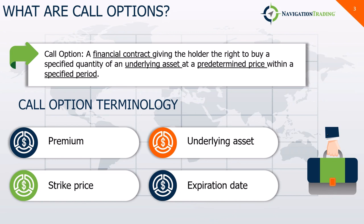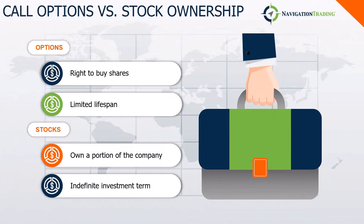Let's talk about call options versus buying stocks themselves. With options, the holder has the right but not the obligation to buy shares of an underlying asset at a certain strike price. With buying a stock, purchasing shares of the company makes you a partial owner and gives you certain rights such as voting rights, and for certain stocks, rights to dividends.